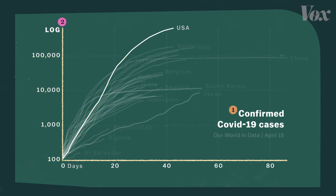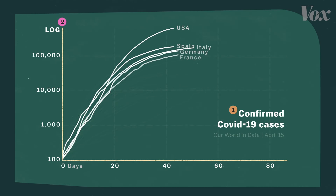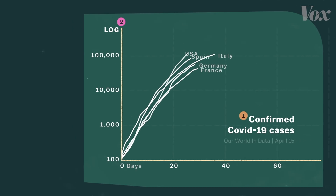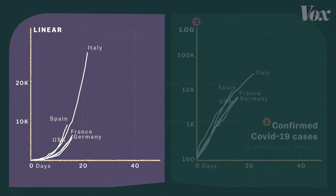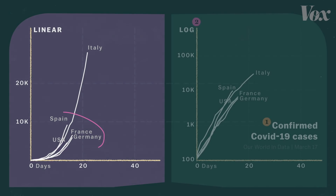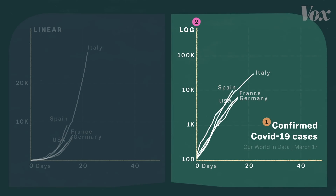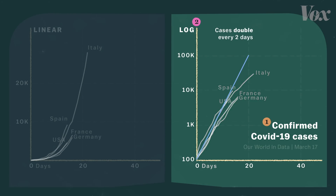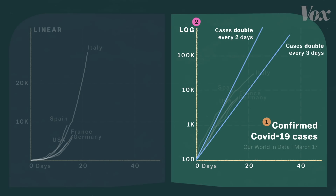So why do it this way? Let's take the five countries with the largest outbreaks right now and rewind them back to March 17th. On a linear scale, it looked like things were pretty bad in Italy, but the others were doing better. The log scale offered a much clearer warning — we were all on the same path of exponential growth. It's the nature of infectious disease that numbers get big fast, so it makes sense for numbers to get big fast on the chart, too.